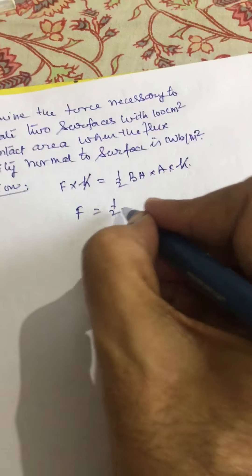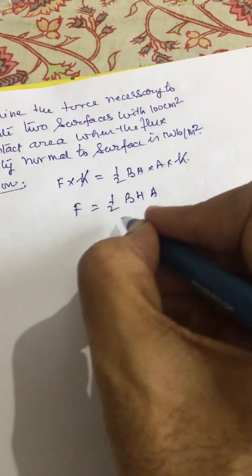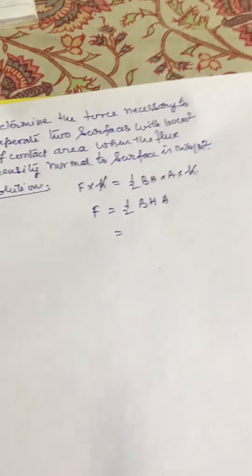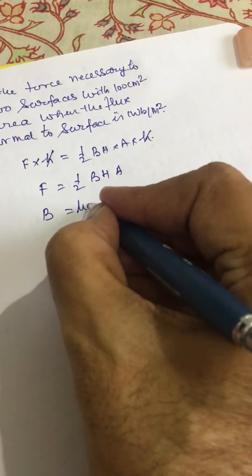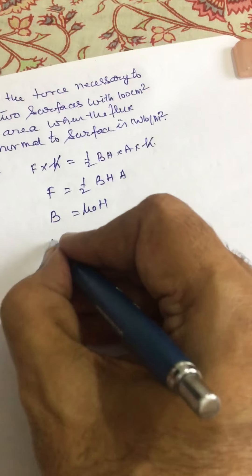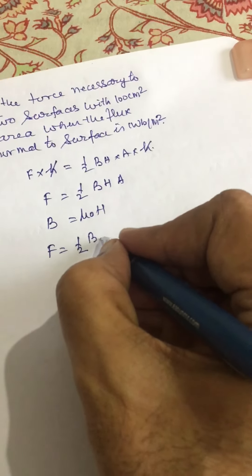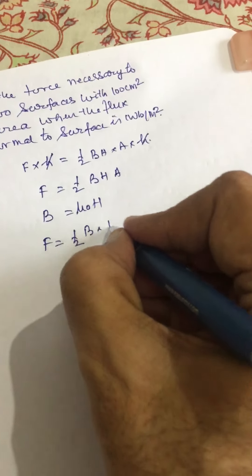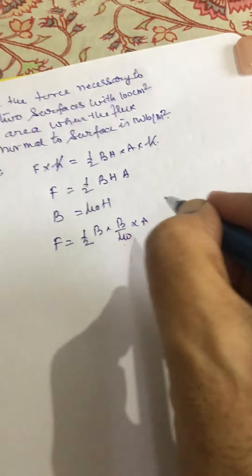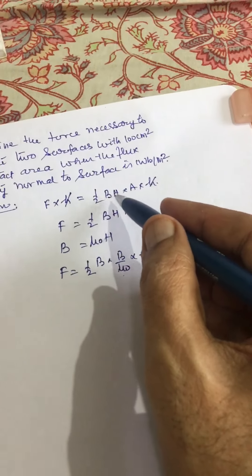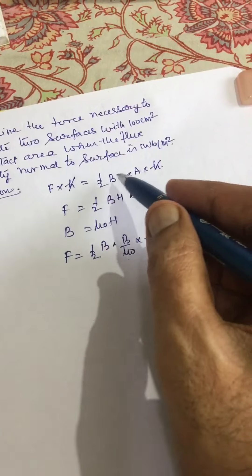F is equal to half BH A, and B is equal to μ₀H in air. So F will be equal to half BH, and H is B upon μ₀ into A. Actually, half BH is the magnetic energy density.